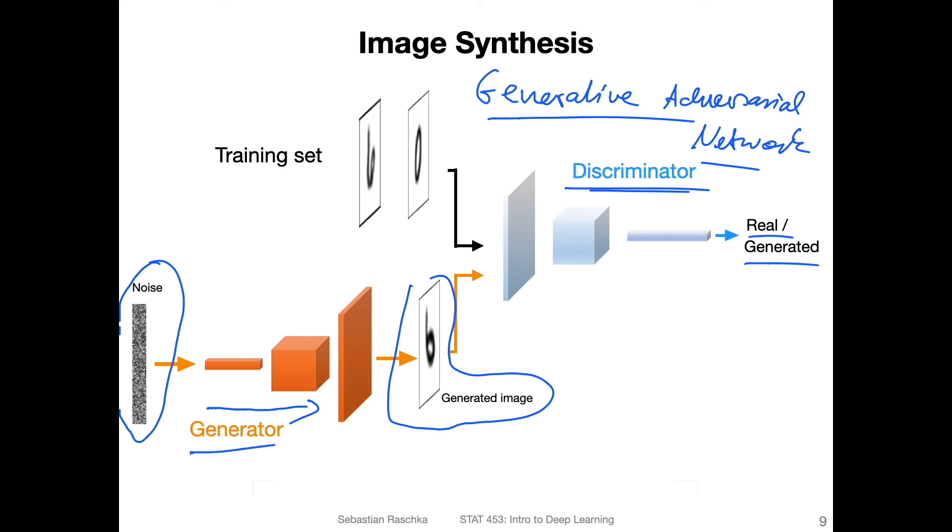Then the discriminator has to say whether this image is real or generated. You train the generator so that it fools the discriminator into thinking that this generated image actually comes from the training set. And then the discriminator tries to distinguish between generated and real images better. You train the discriminator to become better at distinguishing those, and you train the generator to become better at fooling the discriminator. It's basically like a game, a min-max game. You do that until the generator is able to produce realistic looking images.